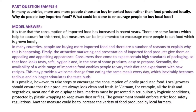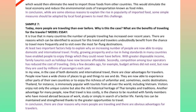Local growers should ensure that their products always look clean and fresh. In Vietnam, for example, all the fruit and vegetables, meat and fish on display at local markets must be presented in scrupulously hygienic conditions, protected by plastic wrapping to keep away dust or flies. The government should enforce strict food safety regulations. Another measure could be to increase the variety of food produced by local farmers, which would eliminate the need to import those foods from other countries. This would stimulate the local economy and reduce the environmental costs of transportation, known as food miles.